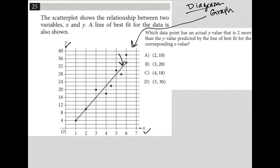We see that line of best fit right there. Which data point has an actual y value that is two more than the y value predicted by the line of best fit for the corresponding x value?